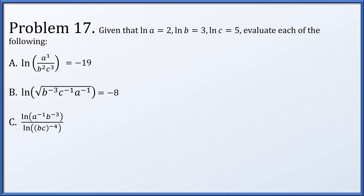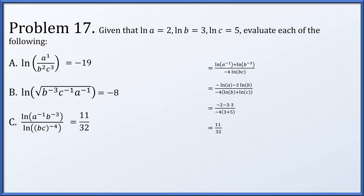Part c: ln of (a to the minus 1 times b to the minus 3) divided by ln of (bc to the minus 4). In the numerator, we expand to get minus ln a minus 3 ln b. In the denominator, the minus 4 is a scalar multiple, and ln bc becomes ln b plus ln c with the minus 4 distributing across. Substituting ln a = 2, ln b = 3, ln c = 5, the numerator becomes minus 2 minus 9 equals minus 11, and the denominator becomes minus 4 times (3 plus 5) equals minus 32. The result simplifies to 11 over 32.